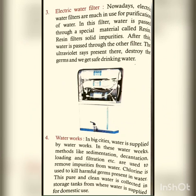Third: electric water filter. Nowadays electric water filters are much in use for purification of water. In this filter, water is passed through a special metallic resin; the resin filters solid impurities. After this, water is passed through another filter where ultraviolet rays destroy the germs and we get safe water. हमारे घर में RO purifier लगा होता है — यह electric water purifier होता है। इसमें resin होता है जो solid impurities को filter करता है और ultraviolet rays germs को destroy कर देती हैं।